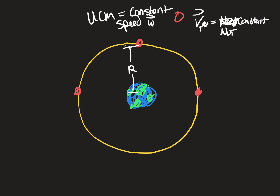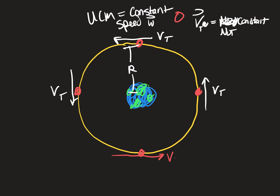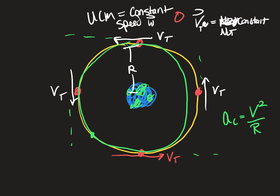The tangential velocity is not constant because as this object moves about a circle, I can find its tangential velocity at any given moment in time, but this velocity tangent is always changing direction. This changing direction is how we get what we call centripetal acceleration, which is V squared over R. So tangential velocity is how fast an object is going at any given moment, and angular velocity is how fast the object is moving about that circular path.